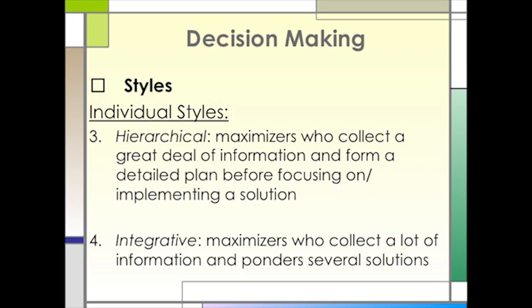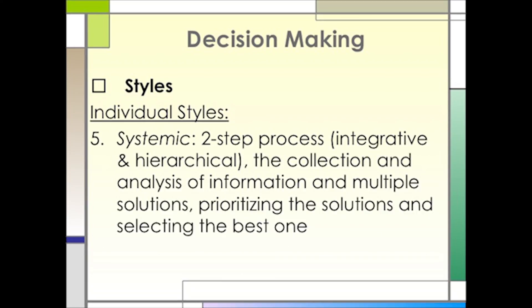Maximizers may be hierarchical or integrative. Hierarchical maximizers want the data. They want the details before they form a plan and focus on a solution. Take that a step further and you have the integrative maximizers who get the data and consider several solutions before making any decisions. Both the hierarchical and integrative maximizers follow a systematic, two-step process to collect and analyze the data, prioritize the solutions, and select the best one.